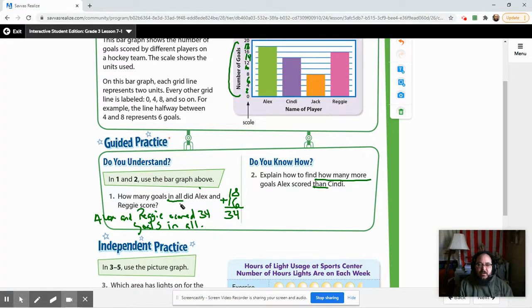How many more goals Alex scored than Cindy? So Alex, again, we already know this. We already wrote this down earlier. He had 18. Cindy, however, scored 14. So we're going to do 18 minus 14. 8 minus 4 is 4. 1 minus 1 is 0. So our answer here is 4. So we would say Alex scored 4 more goals than Cindy, okay?